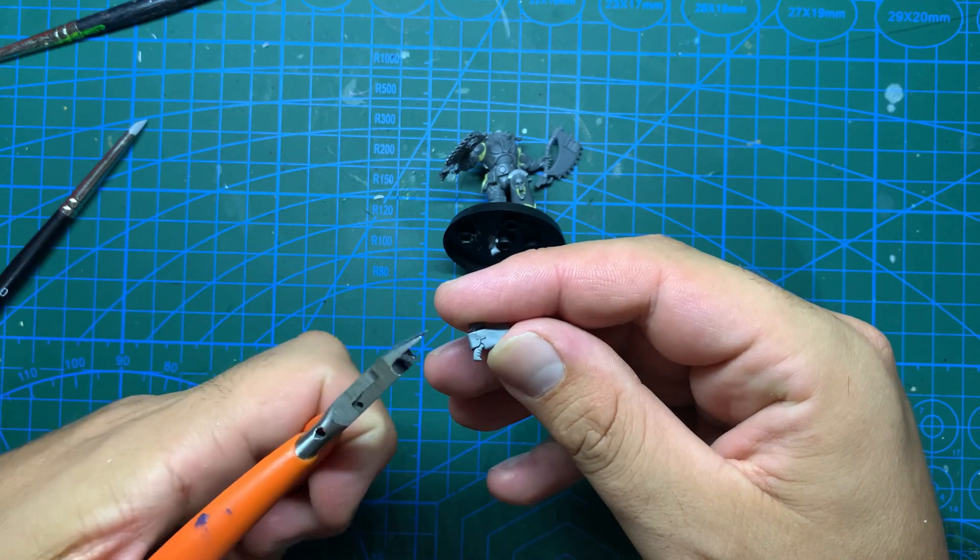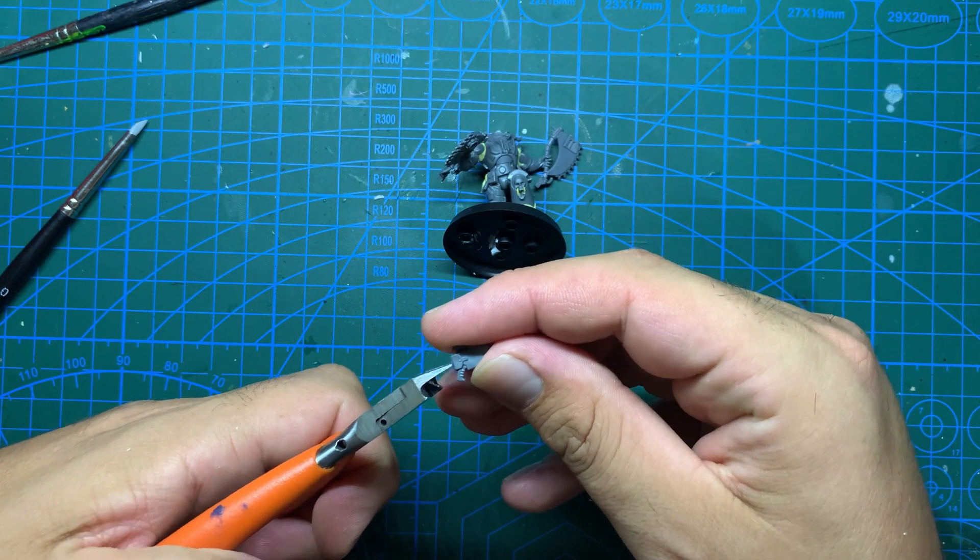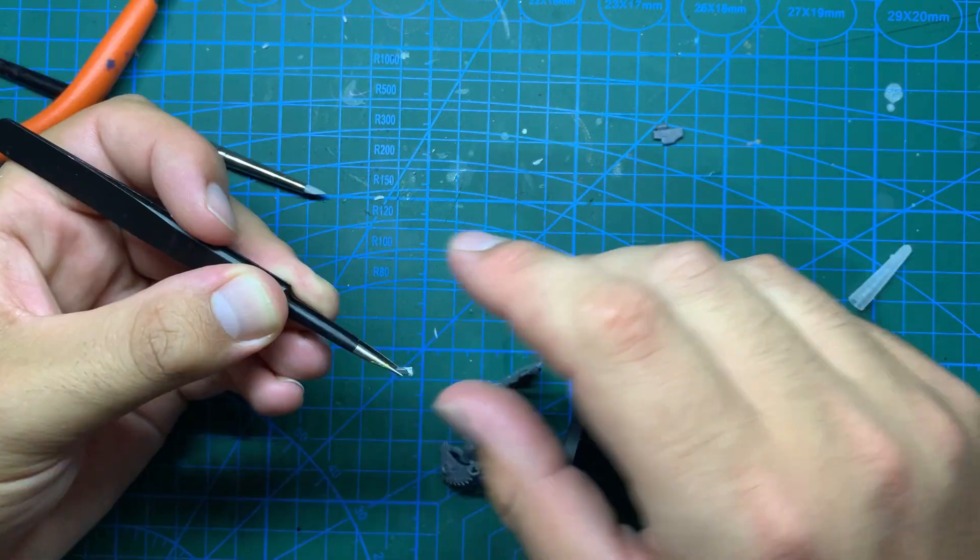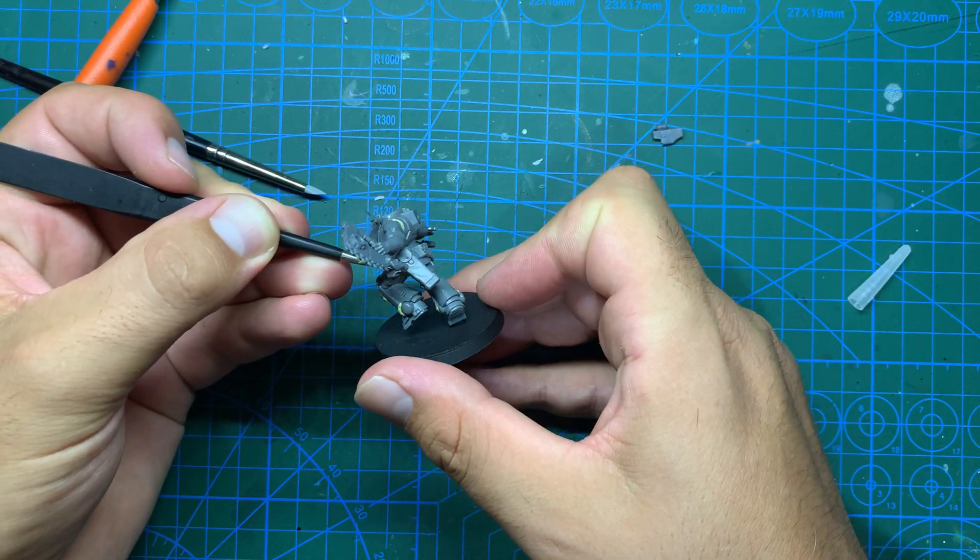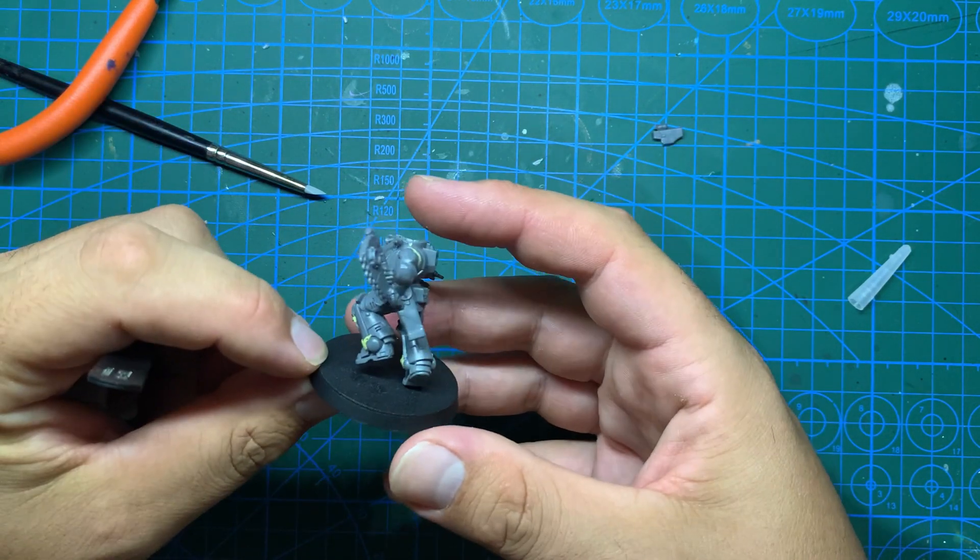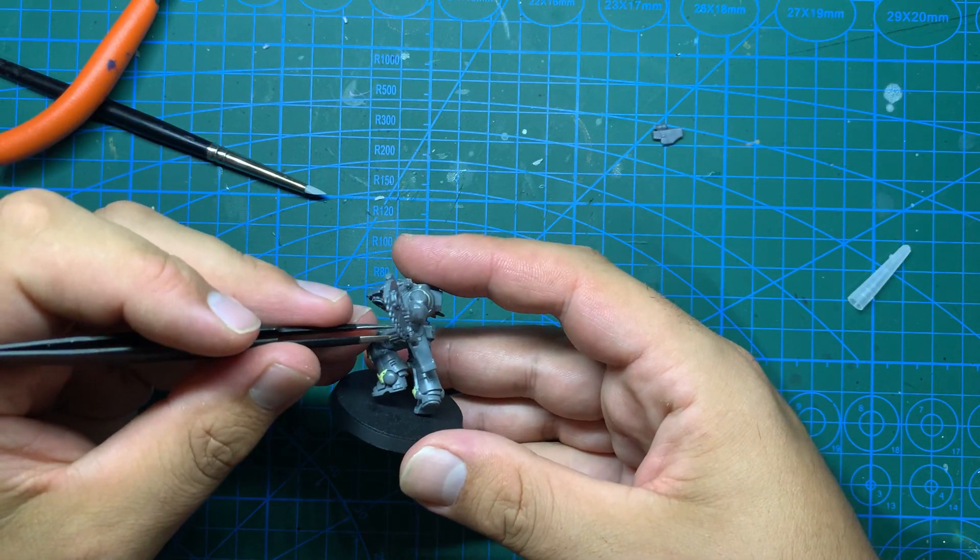Now the assault intercessor I am using as a base was holding his gun and therefore the holster is empty. To rectify this I'm going to trim a handle from a spare holster I have and glue this into place. It probably would have been easier to do this before the arms but I didn't notice it until afterwards.